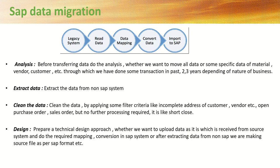What are the different steps involved in a data migration process? From the source system, we first read the data, then do data mapping, then convert data into the SAP format with the correct number of columns, and finally import data into the SAP system. Before performing any migration activity, we have to do analysis — whether we want to move all data for all materials, vendors, and customers, or exclude some of the data.